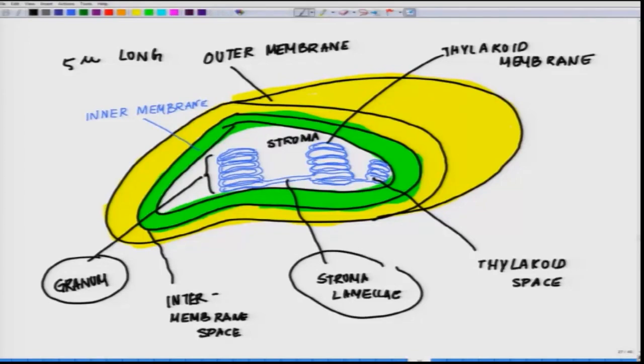The chloroplast have three different membranes. It has an outer membrane. It has an inner membrane. And it has a thylakoid membrane. Outer membrane, inner membrane and a thylakoid membrane and three separate spaces.